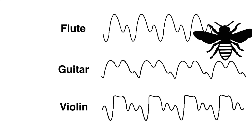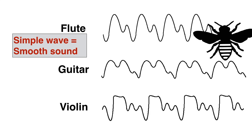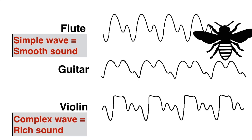Simple sound waves like from a flute sound smooth and even, while more complex and bumpy wave patterns like from a violin sound richer and less smooth.